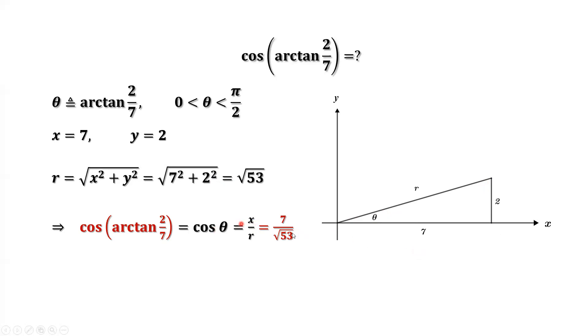adjacent over hypotenuse. That's x over r, which is 7 over square root of 53.